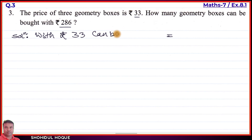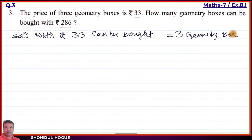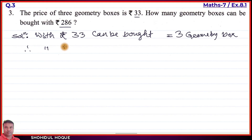With rupees 33, three geometry boxes can be bought. So the cost of three geometry boxes equals rupees 33. Using the unitary method, with rupees 1, we can buy 3 divided by 33 geometry boxes.